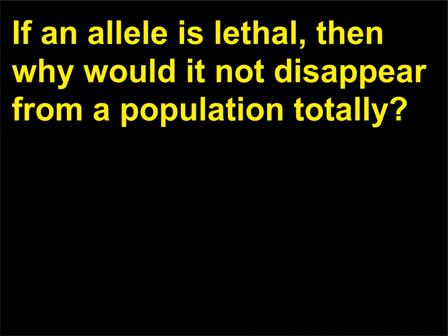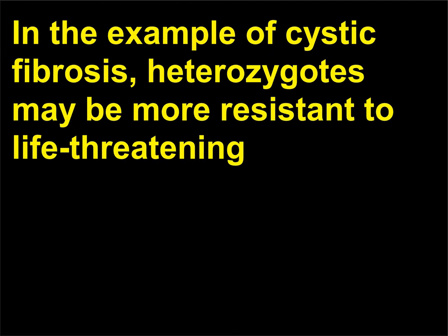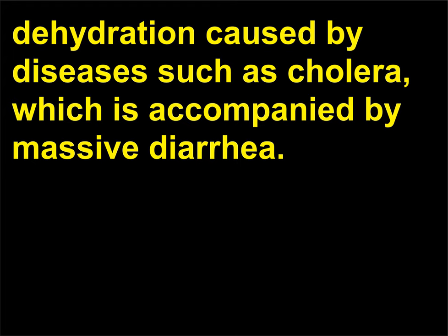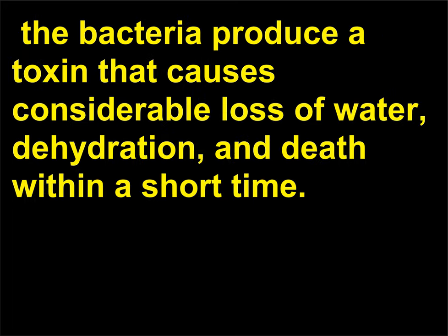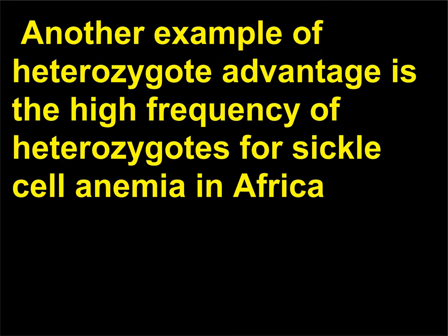If an allele is lethal, then why would it not disappear from a population totally? In the example of cystic fibrosis, heterozygotes may be more resistant to life-threatening dehydration caused by diseases such as cholera, which is accompanied by massive diarrhea. In cholera, caused by the lethal bacterium Vibrio cholerae, the bacteria produce a toxin that causes considerable loss of water, dehydration, and death within a short time. Another example of heterozygote advantage is the high frequency of heterozygotes for sickle cell anemia in Africa, due to increased resistance to malaria.